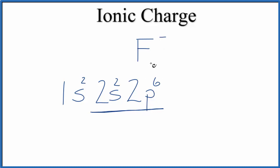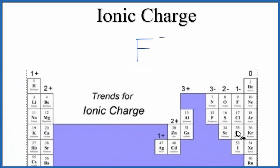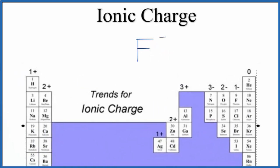So when fluorine bonds to other things like sodium or calcium, it tends to gain an electron. So whether you look at the periodic table here and memorize the trends for ionic charge, or you use electron configurations, the ionic charge for fluorine is 1 minus, or just F minus.